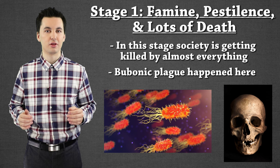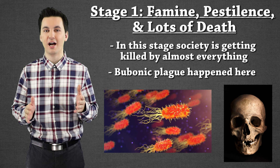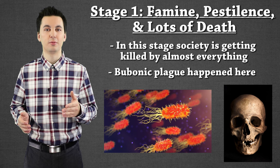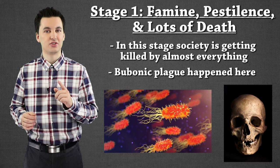Stage one of the Epidemiologic Transition Model is defined by lots of death. Diseases are very impactful at killing, and we're going to see a fragile society — until we start to see this transition into stage two.